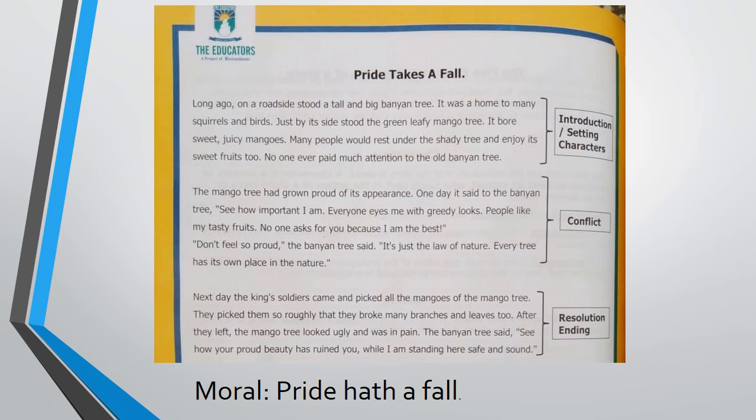The topic of our story is 'Pride Takes a Fall.' Long ago, on a roadside stood a tall and big banyan tree. It was a home to many squirrels and birds. Just by its side stood a green leafy mango tree. It bore sweet juicy mangoes. Many people would rest under the shady tree and enjoy its sweet fruits too. No one ever paid much attention to the old banyan tree.